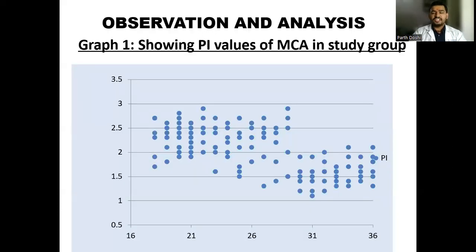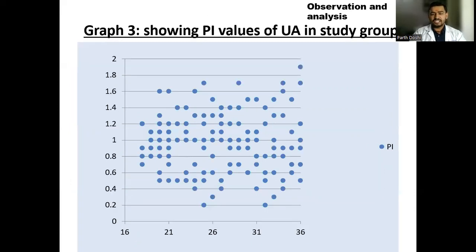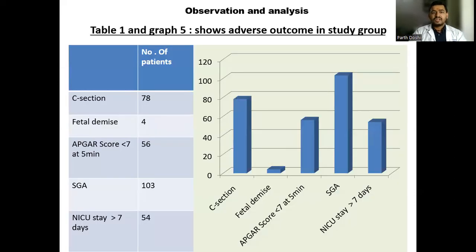The observation and analysis of this study show the PI value of MCA in the study group, which are plotted here, and the PI value of umbilical artery in the study group, which are also plotted here. This graph and table shows the adverse outcomes of the study group. Out of 150 patients, 78 patients had a C-section and 103 patients had small for gestational age. 56 patients had an APGAR score less than 7 and 54 patients had NICU admission for more than seven days.